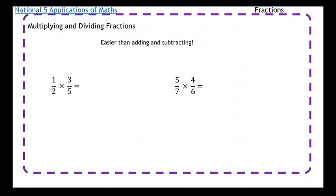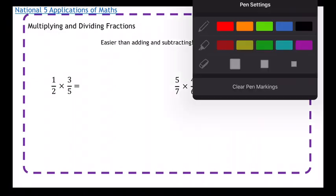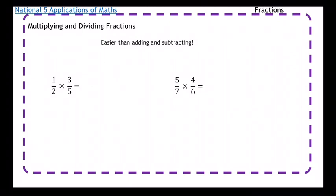So whenever you're multiplying fractions all you've got to do is multiply along the top and multiply along the bottom. I always tell my classes like train tracks and they just go straight across like that. So multiply along the top and multiply along the bottom. So 1 times 3 is 3 and 2 times 5 is 10.